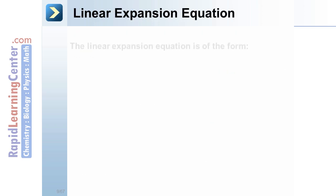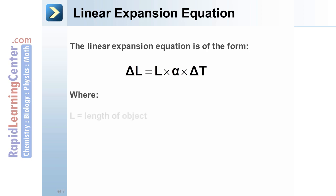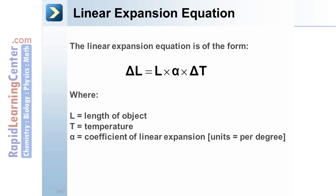Linear expansion equation. The linear expansion equation is of the form delta L equals L times alpha times delta T, where L is the length of the object, T is for temperature, and alpha is a coefficient of linear expansion, which has units of per degree, meaning degree is on the bottom of the fraction. In both cases of L and T, the delta is the Greek letter which means change in. So that would represent change in length or change in temperature.